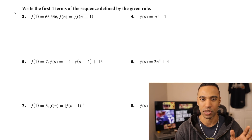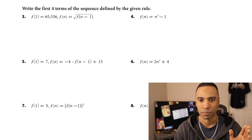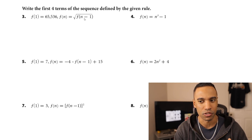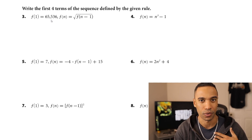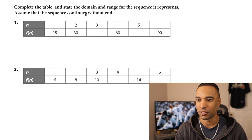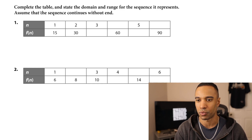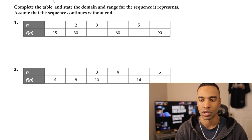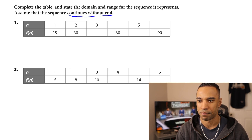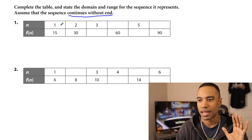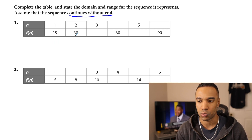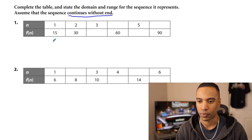Some of the questions — this isn't even the first question actually. Numbers one and two: complete the table and state the domain and range for the sequence it represents. Assume that the sequence continues without end. If you don't know what a sequence is, a sequence is a list of numbers, and the numbers are actually these ones right here — the 15 and the 30, etc.